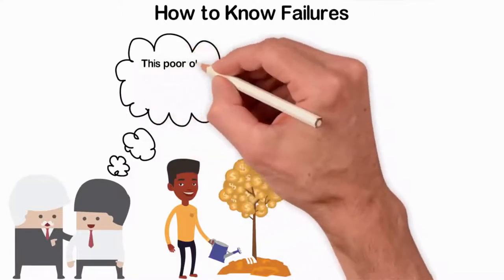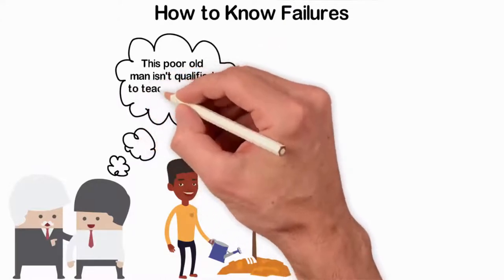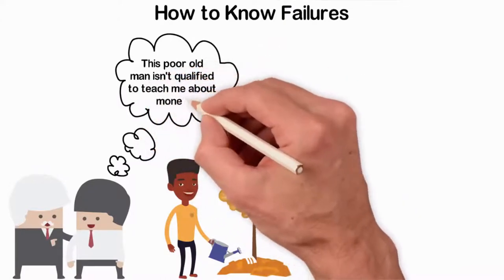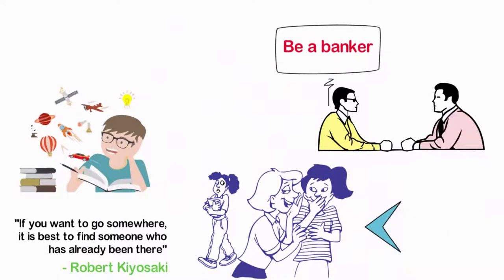So, the very first sign to know who not to take advice from is by identifying those who don't have what you want for your life and exclude them from your list of advisors. Second are the negative people. These people are everywhere.